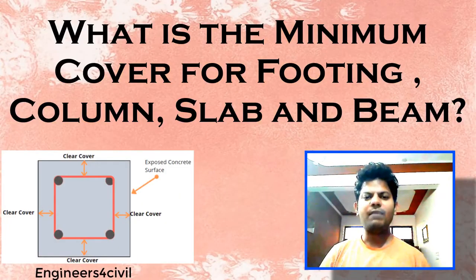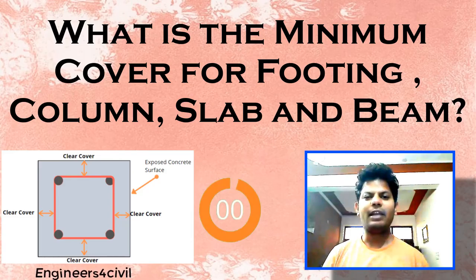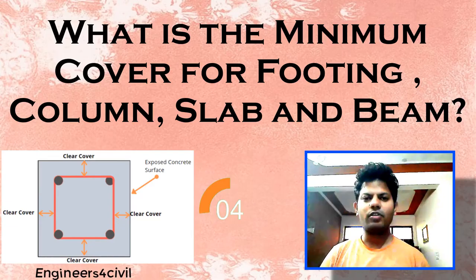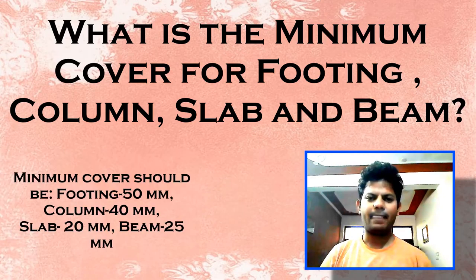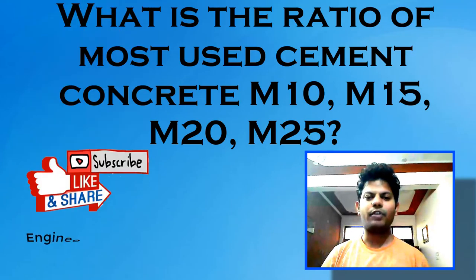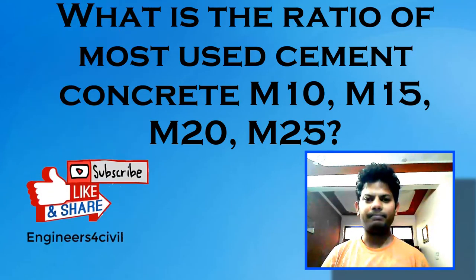What is the minimum cover for footing, column, slab and beam? Very important question. Footing: 50 mm, column: 40 mm, slab: 20 mm, and beam: 25 mm.